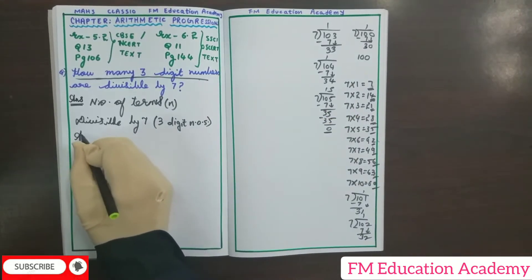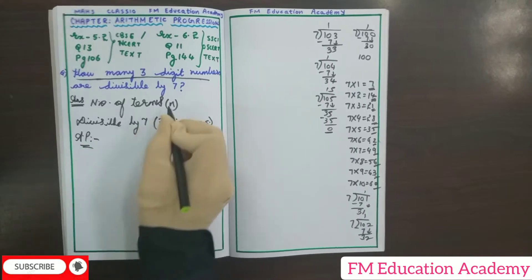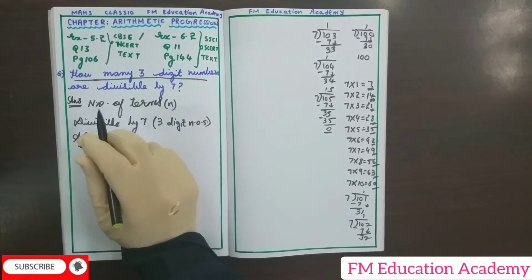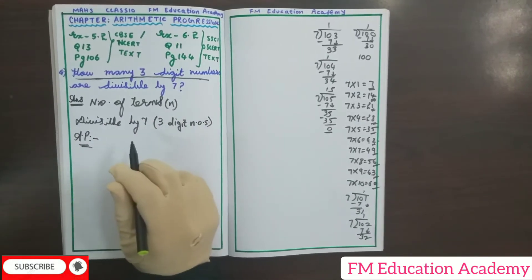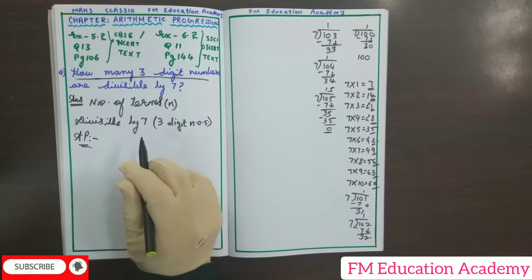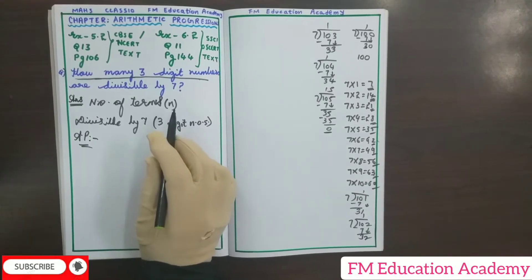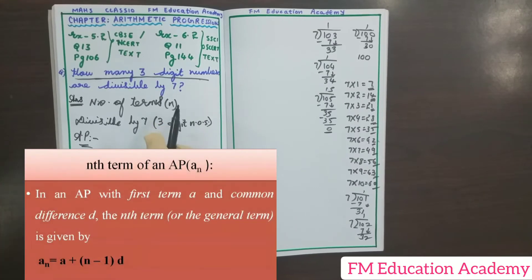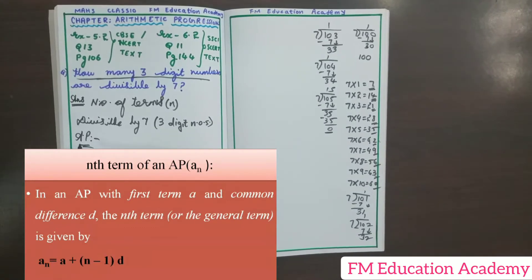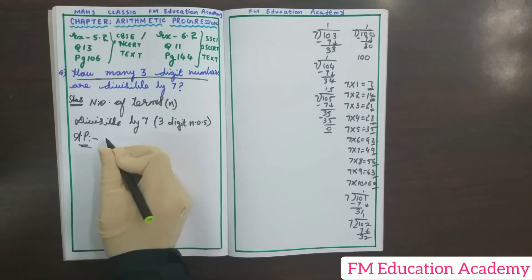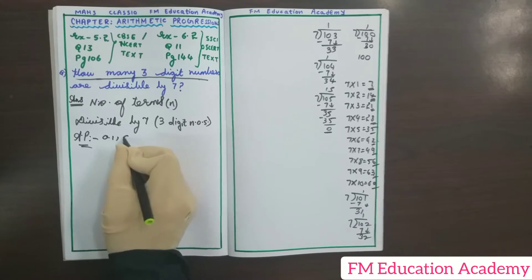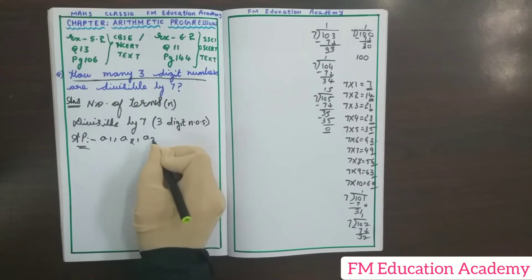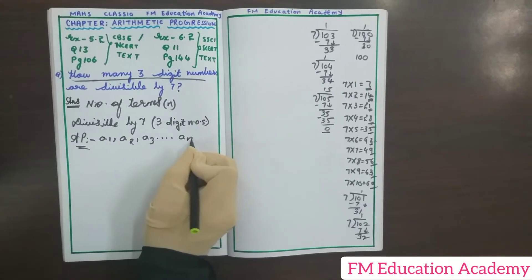In my AP series, for finding the number of terms, I need to know the first term A and the common difference D. Then I can substitute the values of Aₙ, A, and D in the Nth term formula: Aₙ = A + (N − 1) × D, and find the value of N. The AP series is of the form A₁, A₂, A₃, up to Aₙ, the nth term.